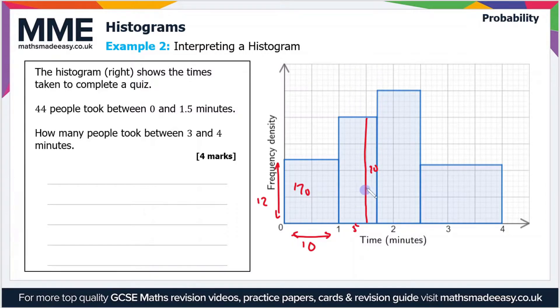So therefore that's an area of 5 times 20 which is 100 squares. So between 0 and 1.5 minutes we have 120 plus 100 squares which is 220 squares.